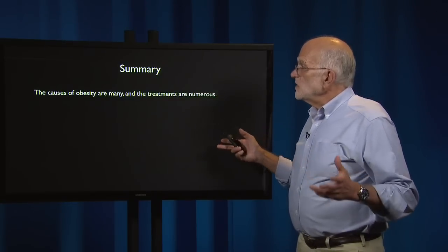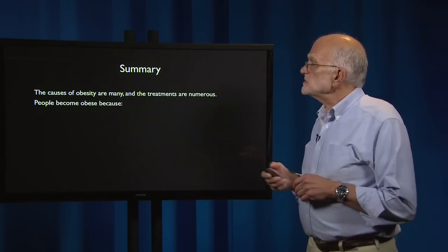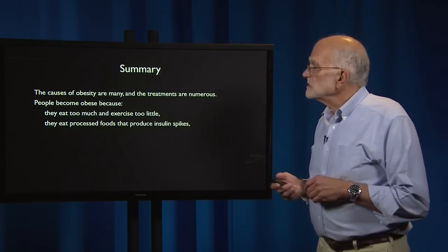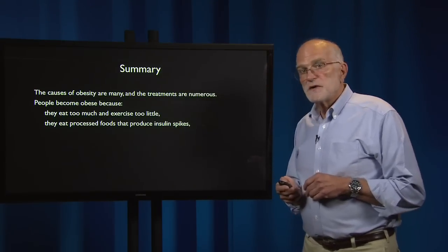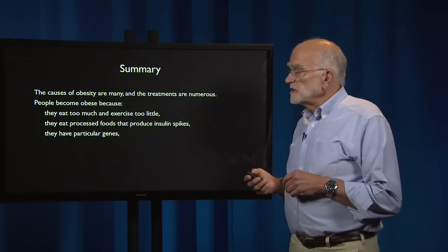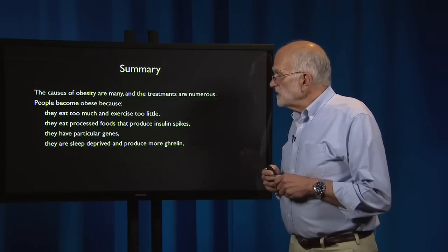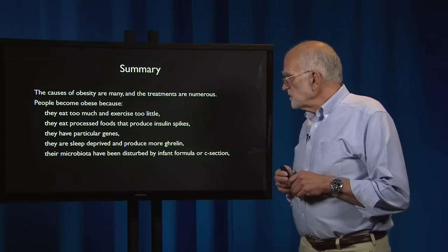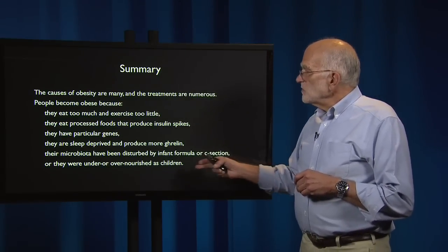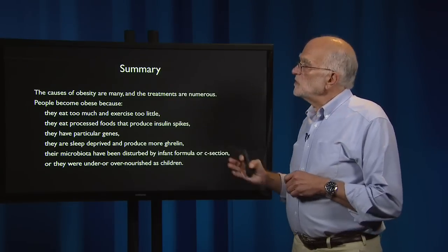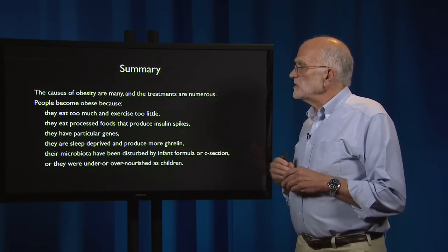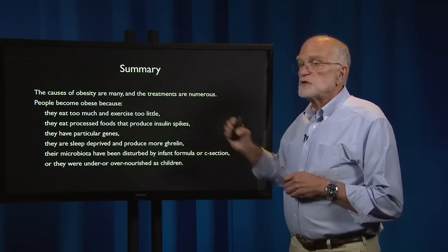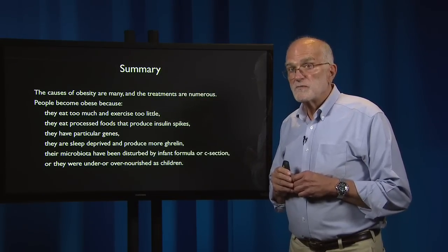To summarize, the causes of obesity are many and the treatments are numerous. People become obese because they eat too much and exercise too little; they eat processed food that produces insulin spikes; they have particular genes; they are sleep-deprived and produce more ghrelin; their microbiota have been disturbed by infant formula or by c-section; or they were over- or undernourished as children. So it is a multifactorial causal chain, but it is producing one of the major epidemics that currently threatens the health of contemporary populations.